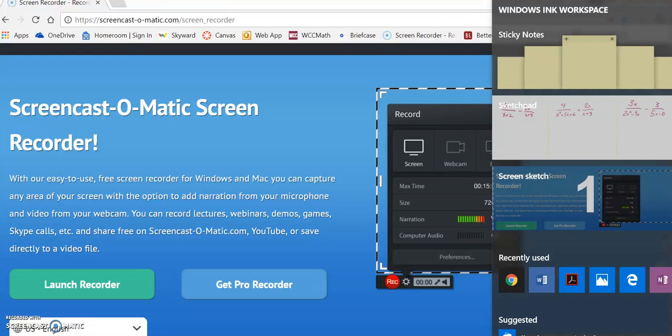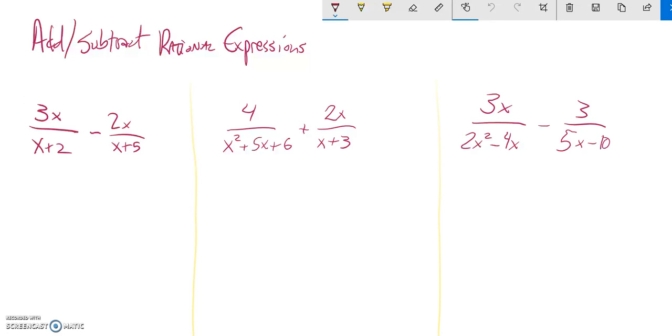This is a video example on how to add and subtract rational expressions. What we're doing is just what we always do with fractions when we add or subtract fractions. The whole deal with fractions is we need to have a common denominator in order to combine these with addition or subtraction.